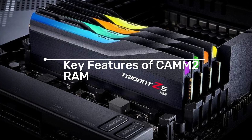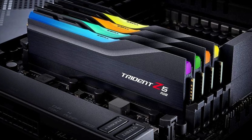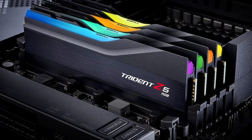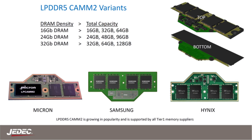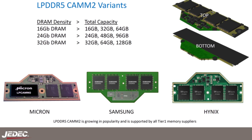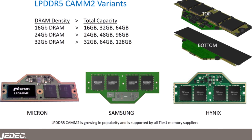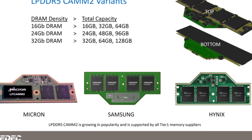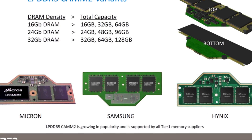Key features of CAM2 RAM. Horizontal pin layout: unlike traditional DDR RAM with vertical pins on the edges, CAM2 features a horizontal pin layout on the bottom of the PCB (printed circuit board). This design allows for a much thinner module, ideal for compact devices.